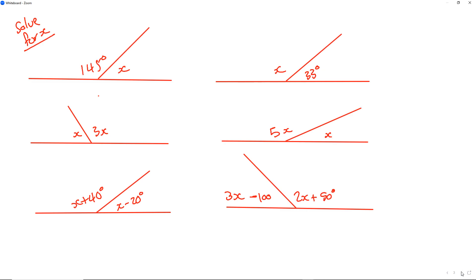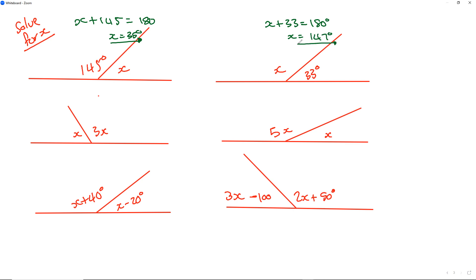Take a few minutes and try the following questions. For the first one: x plus 145 equals 180, so x equals 35 degrees. Then x plus 33 equals 180, so x equals 147 degrees. Next: x plus 3x equals 180, so 4x equals 180, and x equals 45 degrees.